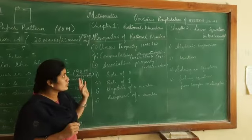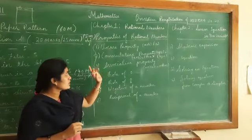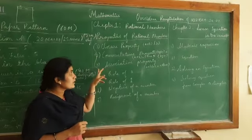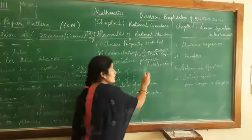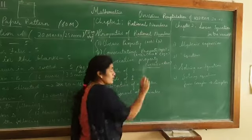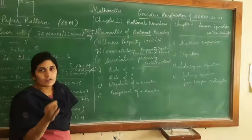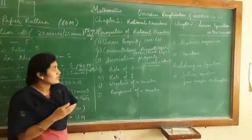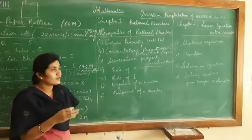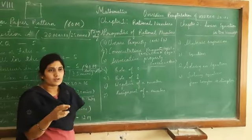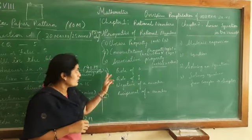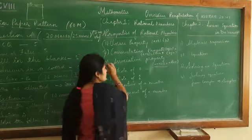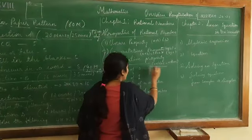For associative properties we use three rational numbers and test whether it is associative for addition, subtraction, multiplication, and division.